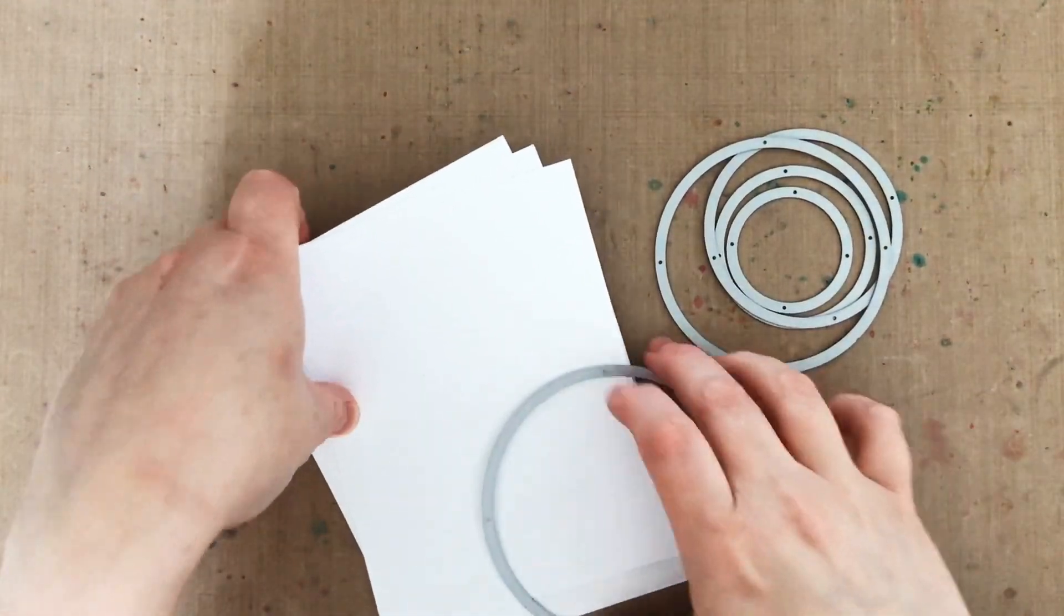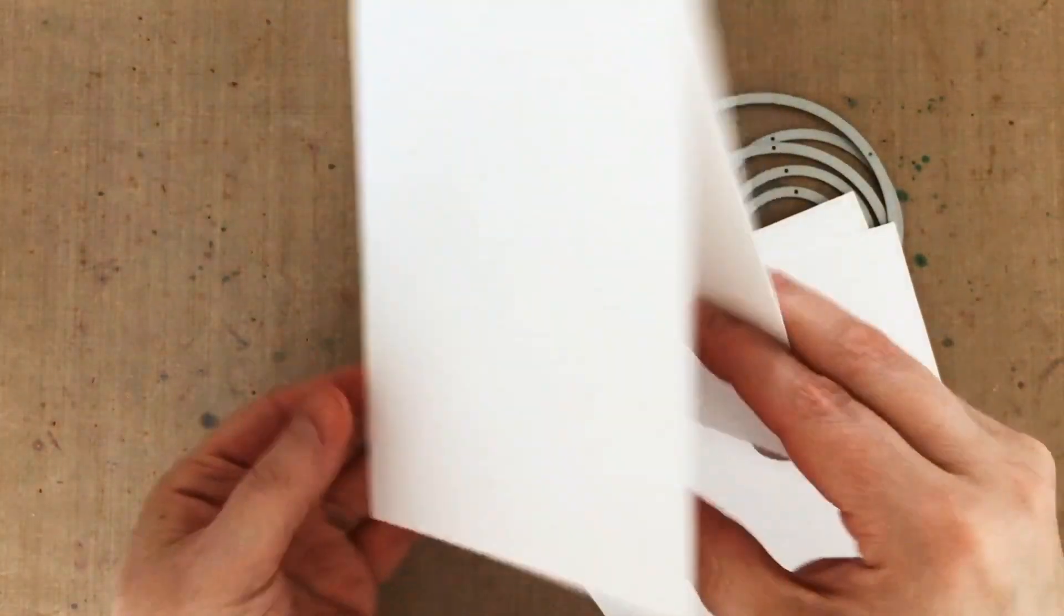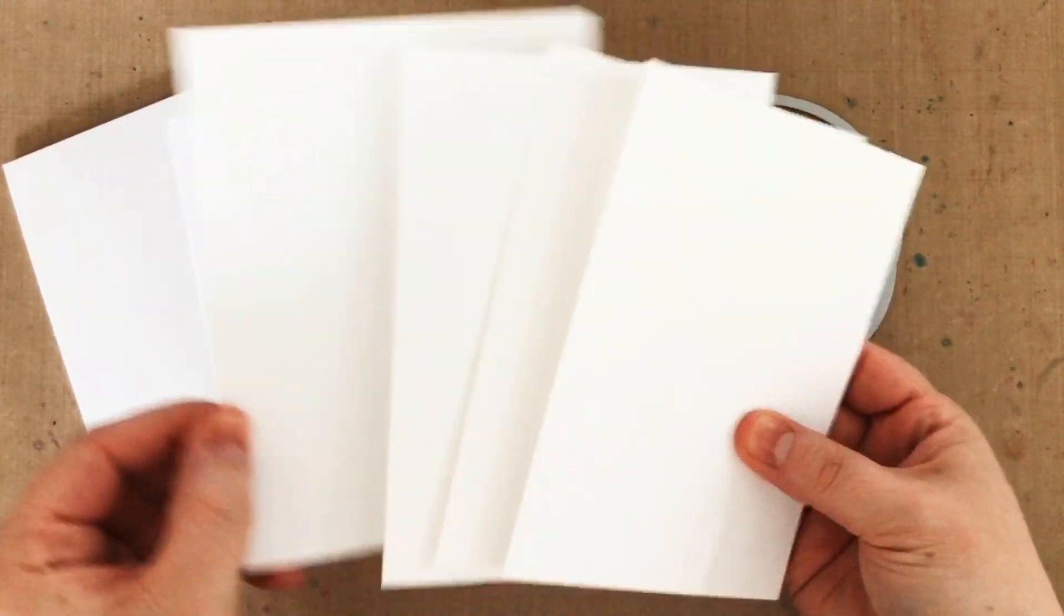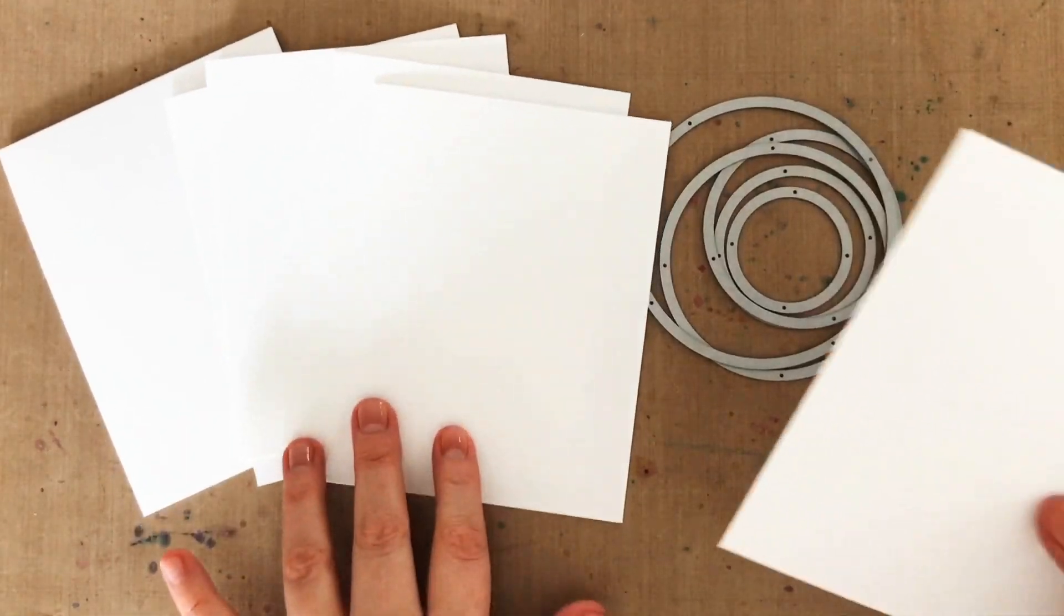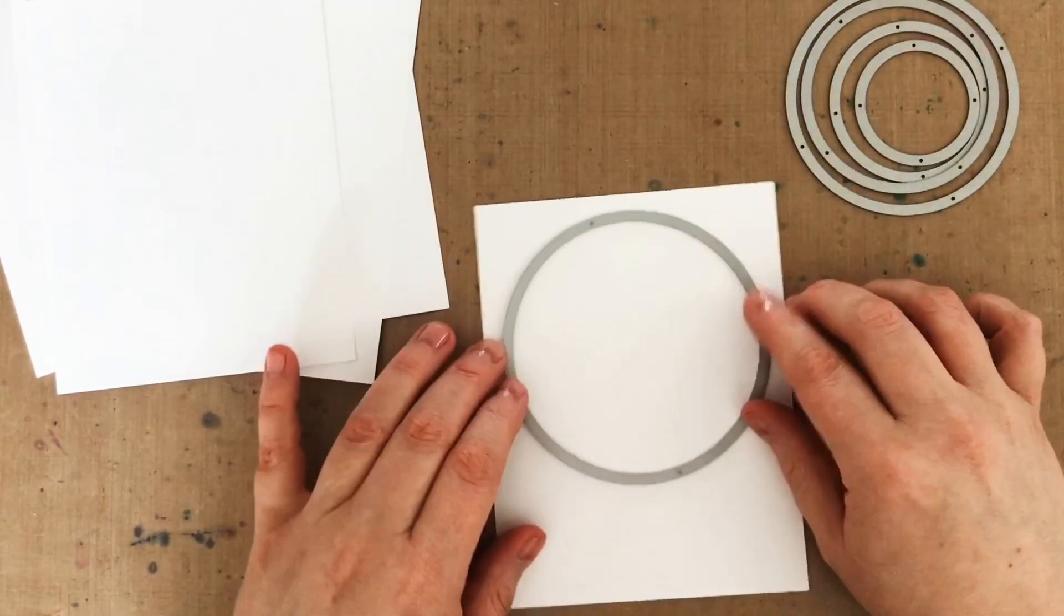Now to start, I'm starting with basically a big stack of white cardstock. So I have an A2 card base from 110 pound solar white, I've got four A2 panels from 80 pound solar white, and then one more A2 panel in 110 pound. I like my card base and my card front to be extra sturdy.